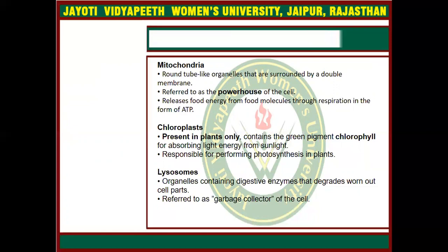The next organelle is the chloroplast, which is present only in plant cells and is absent in animal cells. It uses sunlight to produce nutrients for the plants. The process by which it utilizes sunlight is known as photosynthesis, and it synthesizes nutrient materials for the plants.